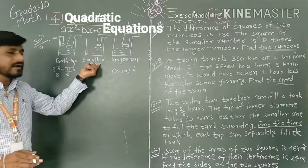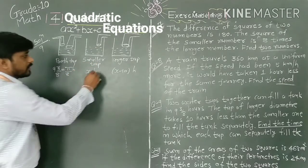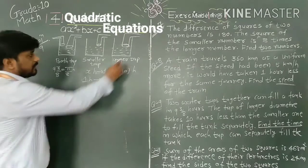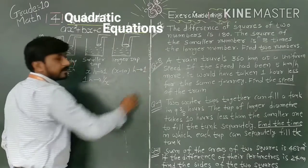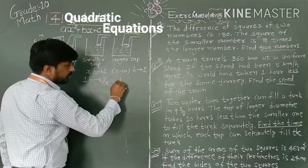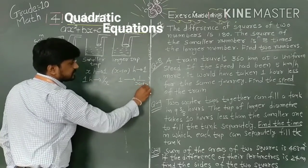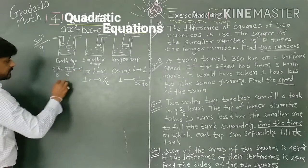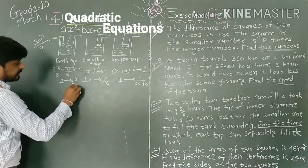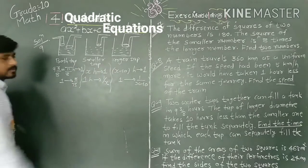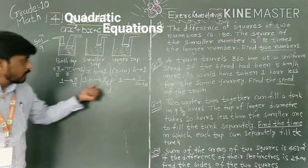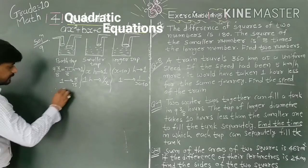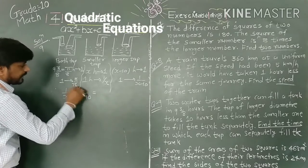If the smaller tap works x hours for one full job, in 1 hour it completes 1/x of the work. Similarly, the larger tap completes 1/(x - 10) per hour. Together they fill 8/75 of the tank per hour. Therefore: 1/x + 1/(x - 10) = 8/75.